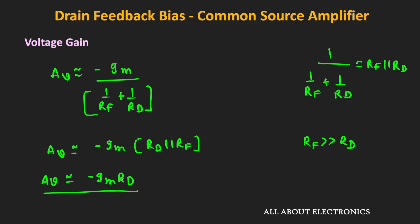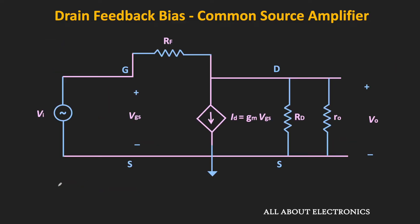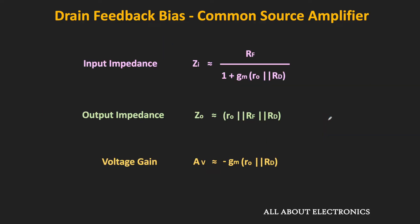So far, we assumed that the output resistance of the MOSFET is infinite. If we also consider the effect of the output resistance r0, then instead of RD alone we need to use the parallel combination of RD and r0. That means in all the above expressions, RD is replaced by RD ∥ r0. These are the updated expressions for input impedance, output impedance, and voltage gain including the effect of output resistance.